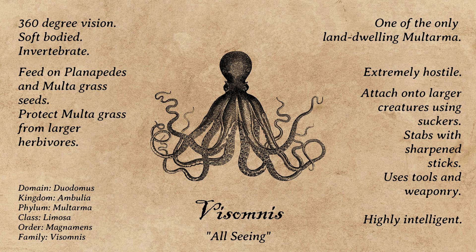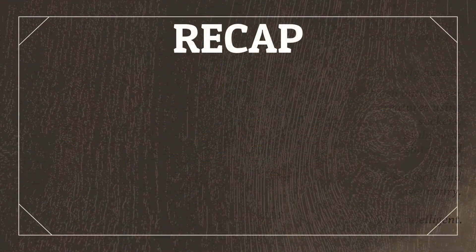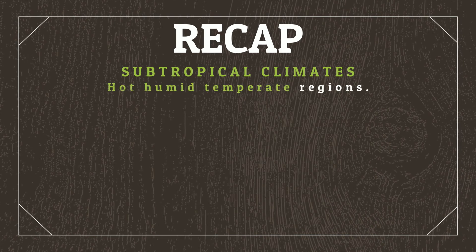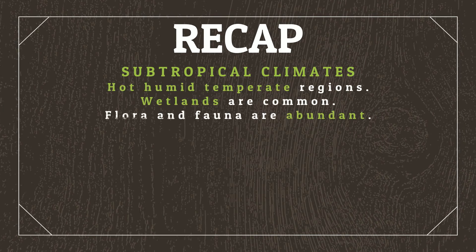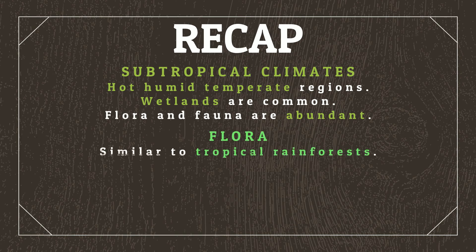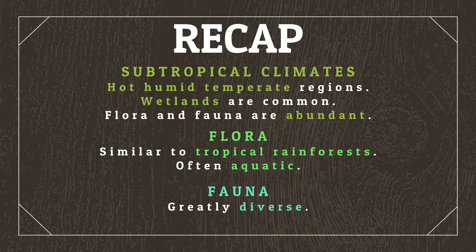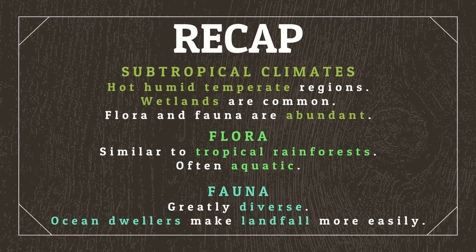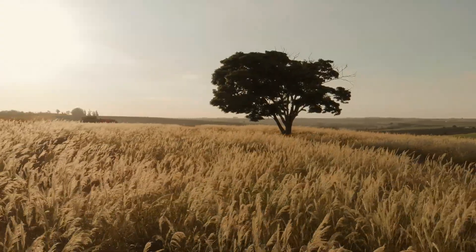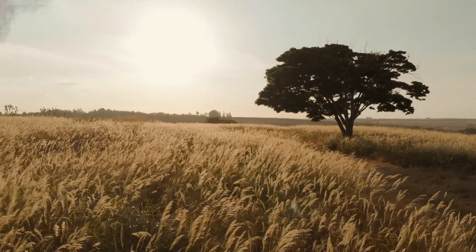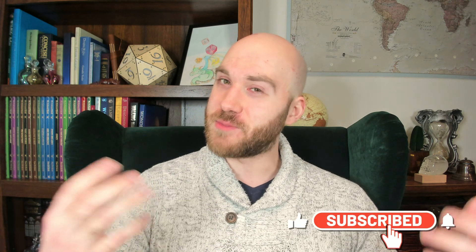To recap: subtropical climates are categorized as hot, humid, temperate regions where wetlands are common and flora and fauna are abundant. Flora within the area is similar to those found in tropical rainforests, and is often aquatic. Fauna is greatly diverse, and a unique opportunity is present within the subtropics for ocean-dwelling creatures to make landfall more easily. Join me next time when we'll discuss Mediterranean climates, which are the temperate zones on the opposite side compared to subtropical ones. You can find all the information for this video, as well as other worldbuilding resources, over at worldbuildingcorner.com. If you enjoyed this video, don't forget to like and subscribe to follow the worldbuilding journey. Until next time, stay awesome!